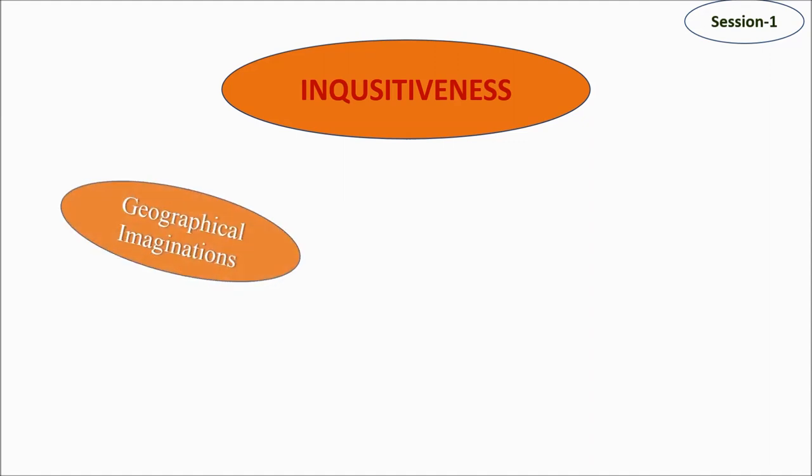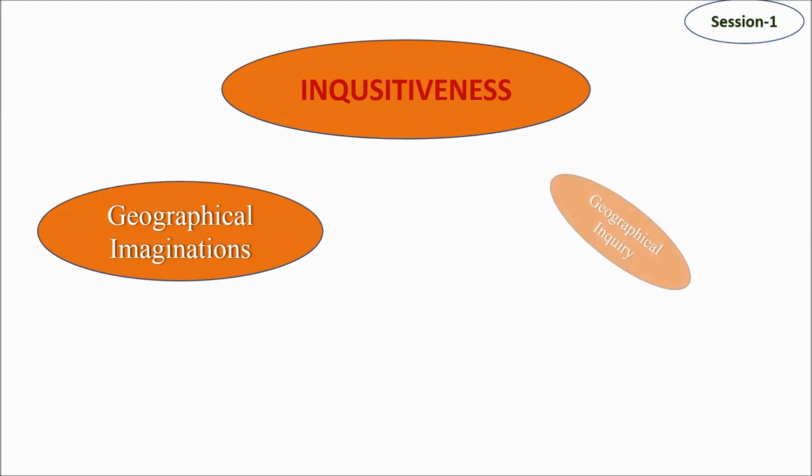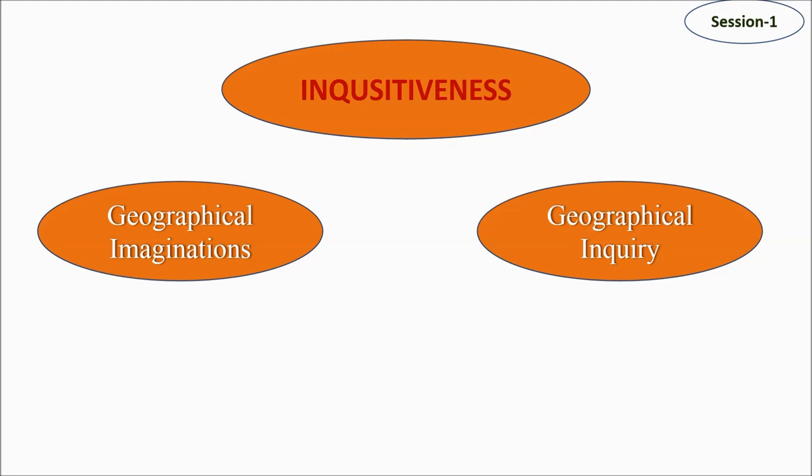Then it goes further to geographical imaginations. When we talk about fieldwork in geography, or in the majority of social sciences, we talk about spaces, and imaginations about those spaces are very important. For example, if you're sitting in New Delhi and somebody says 'Mumbai,' you suddenly have some imaginations about that place. If we want to learn more, we need inquiry. So we have three I's: inquisitiveness, imagination, and inquiry.